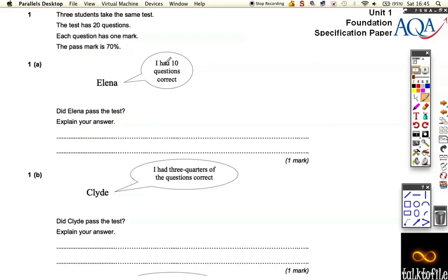Eleanor had 10 questions correct. Well, all you need to say is 10 out of 20 is 50%. And then she obviously, if she only got 50% and the pass mark was 70%, she failed the test. Nice easy mark to get off with.